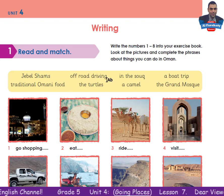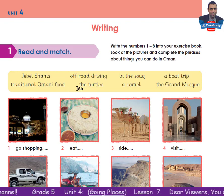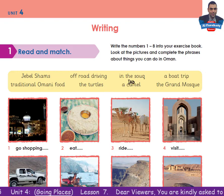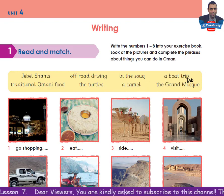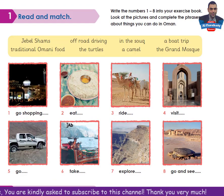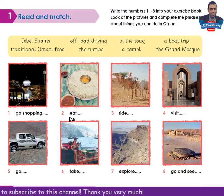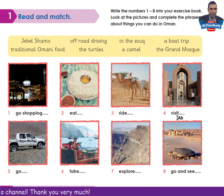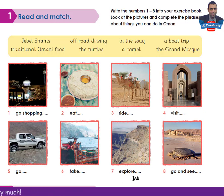Number 2: off-road driving. Number 3: turtles. Number 4: in the souk. Number 5: a camel. Number 6: a boat trip. The Grand Mosque. The verbs to match are: go shopping, eat, ride, visit, go, take, explore, go and see.